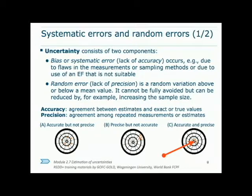The second aspect is precision, which is the agreement between repeated measurements of the estimate. If repeated measurements do not agree or have large variance, then their precision is low, and the methodology is said to have large random error. This should be reduced as much as possible.